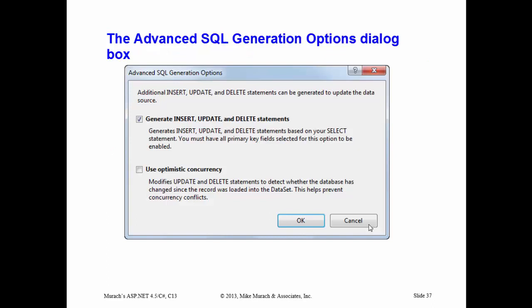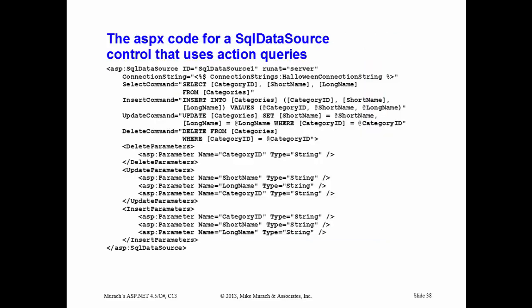There are advanced SQL generation options. When walking through the wizard, it typically generates insert, update, and delete statements for you if it can. Requirements: you must be querying a single table (not a view joining two tables) and the table must have a primary key defined. If those are true, you can check the option and Visual Studio generates insert, update, delete statements. You also have the option to use optimistic concurrency, which modifies the update and delete statements to check whether the database has been changed. When firing off an update it asks: are the values the same as when I first started? If yes, apply the update; if not, warn the user. Same for delete. Then this is the code generated when you walk through the wizards.